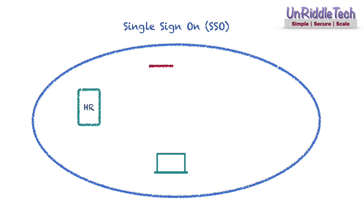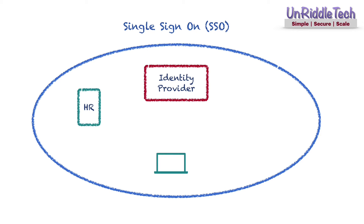You may need to configure an identity provider to implement single sign-on. An identity provider can centrally manage user credentials and may provide authentication as a service. Most identity providers work based on a claim or token-based model. First, you need to configure trust between the application and the identity provider, so that the application trusts the claim or token provided by the identity provider after successful authentication.